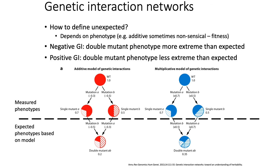A negative genetic interaction generally refers to combinations of mutations that lead to a phenotype more extreme than expected based on your model. A positive genetic interaction is a combination of mutations that leads to a phenotype less extreme than you would expect.